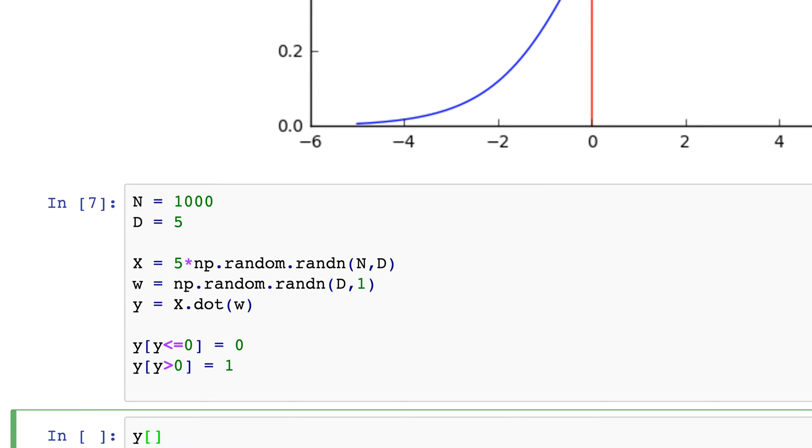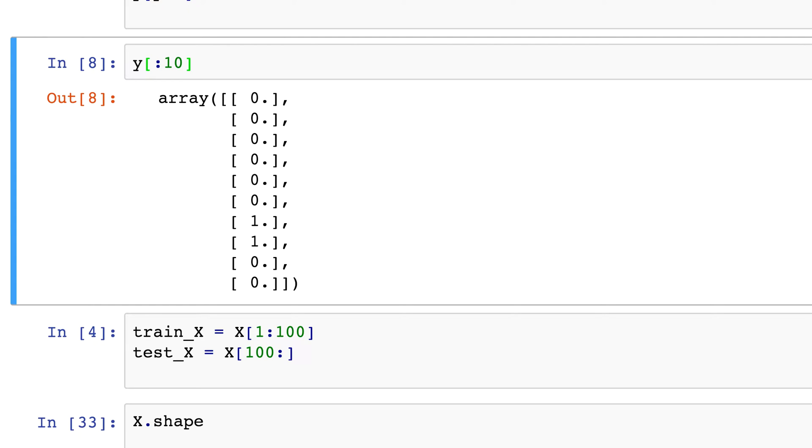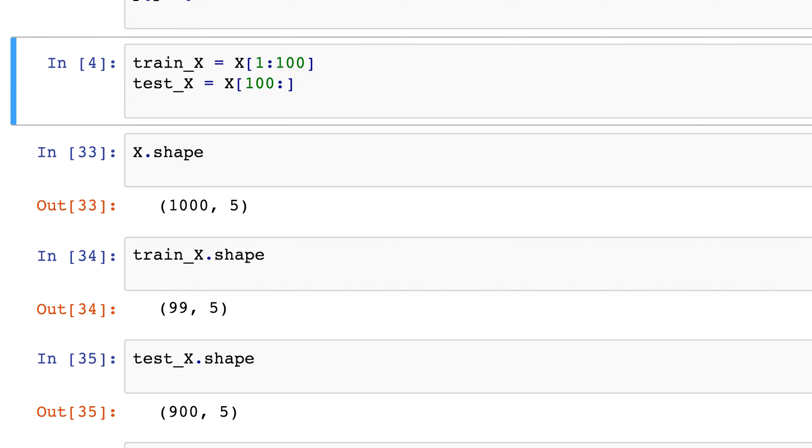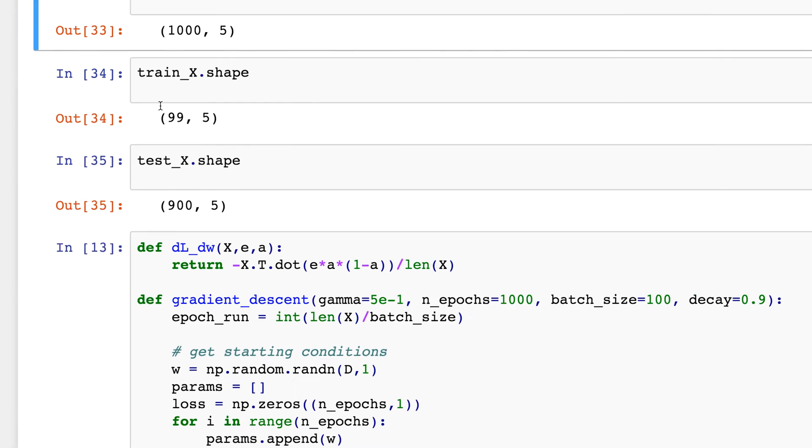Okay, so that's what the dataset looks like. And just so that I can show you there's a few examples, let's just do this. Okay, so you see all the zeros and ones.